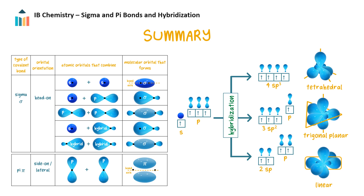Sp hybridization occurs when an s and a p orbital mix, forming two equivalent hybrid orbitals. They arrange themselves linearly during bonding. This leaves two unhybridized p orbitals, perpendicular to each other and perpendicular to the bond axis.